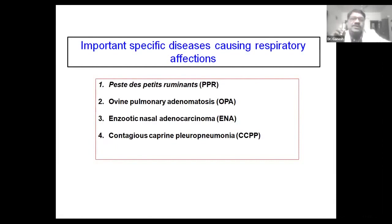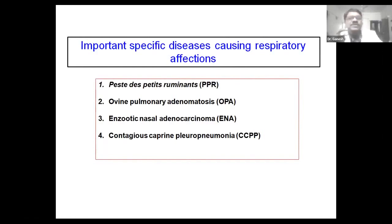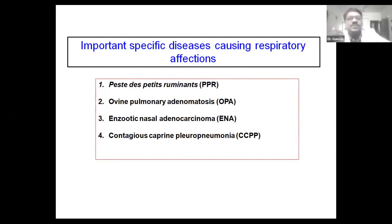Specific diseases affecting the respiratory system and causing pneumonia include PPR, which is well known. In the field you may have gotten a lot of cases of PPR, and in Rajasthan PPR is also prevalent. Since mortality is very high, this is the most important disease in small ruminants, both sheep and goat. Another disease always neglected in the field is ovine pulmonary adenomatosis — OPA. This is a chronic disease, which is why it is neglected. But day by day its economic importance is increasing, with around 6 to 7% incidence in slaughter cases, making it an emerging disease for India.